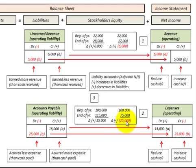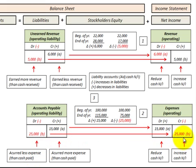If there's a reduction of $25,000 in accounts payable during the year, we debit accounts payable for $25,000 — that's where we accrued less expense than the cash paid. The credit entry reduces our expense account by $25,000, which increases net income, because we accrued less expense than the cash that was paid.